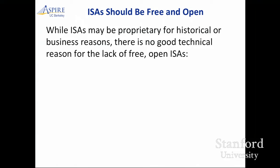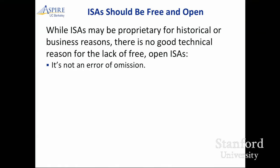Why are we in a situation where there are multiple different ISAs? It's basically historical and business reasons. There's no technical reason for the lack of a free and open ISA. It's not an error of omission — Intel and ARM don't just forget to make their ISA open. They will actively sue you if you try to do an implementation of Intel Core or an ARM core or IBM Power or any of these other ISAs. They aggressively go after anybody trying to implement to that standard.